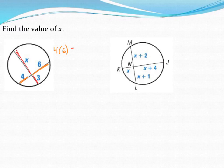This will be true any time two chords intersect in a circle. And so this will allow us to write this equation, 4 times 6 equals 3 times x.